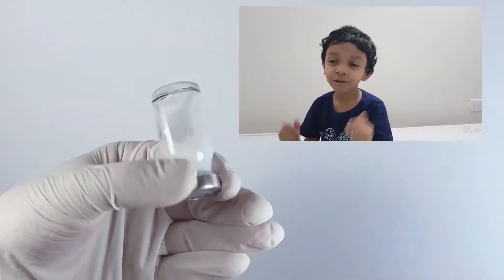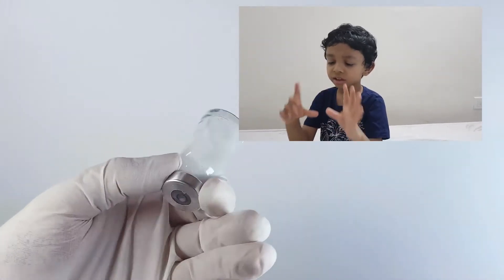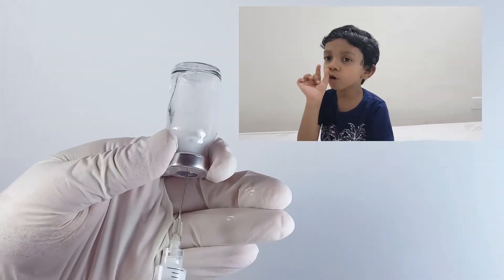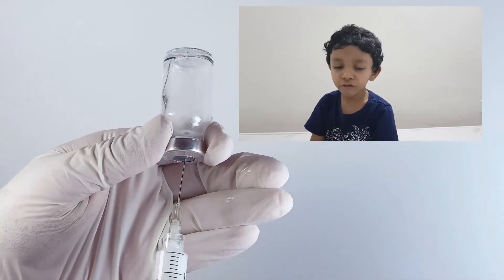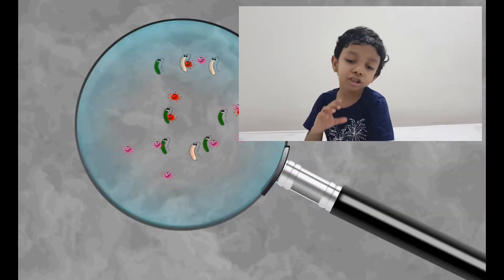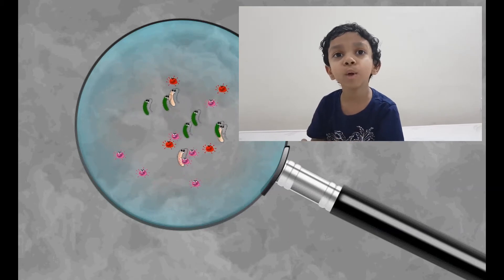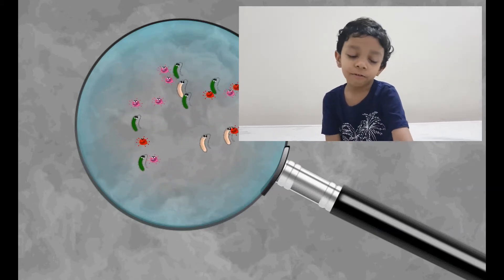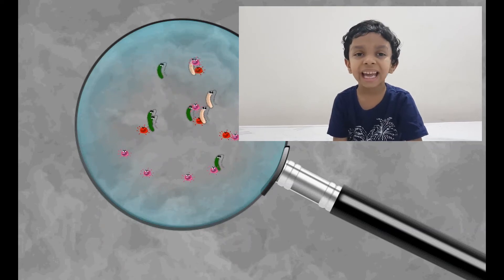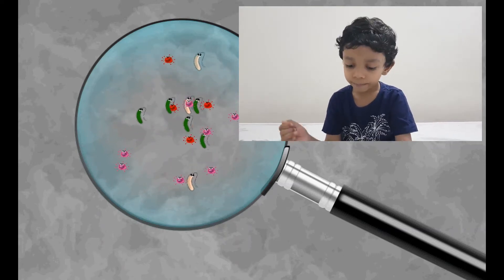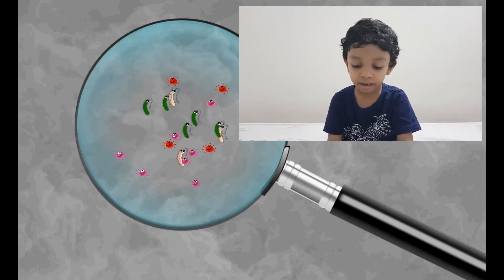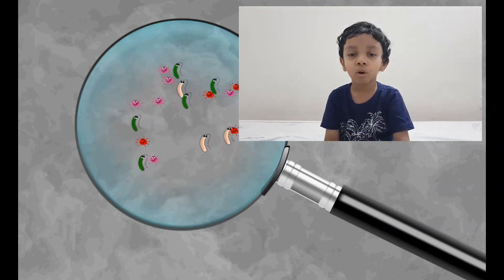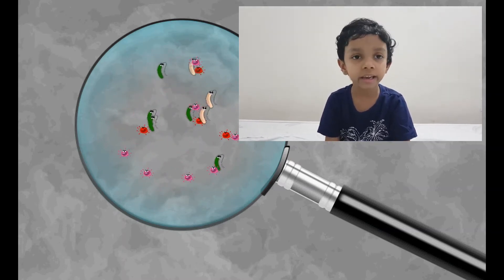How? The vaccine consists of a small weak part of a virus. When it is injected, it will alert our immune system. An immune system builds an immune body to protect against the virus.